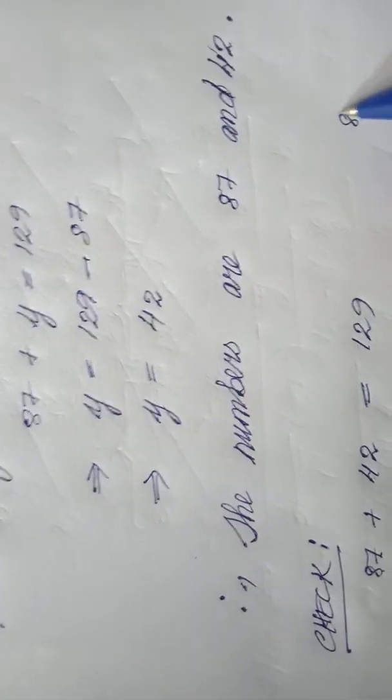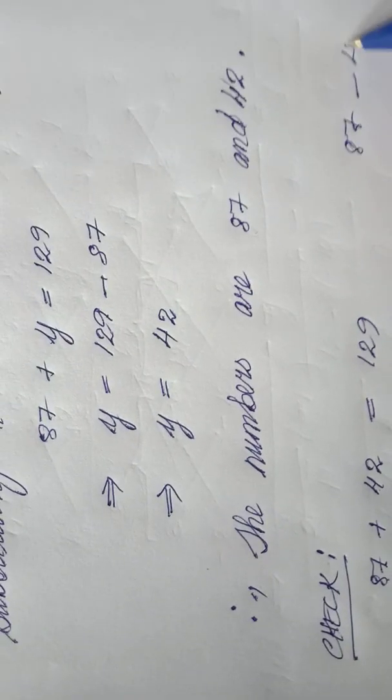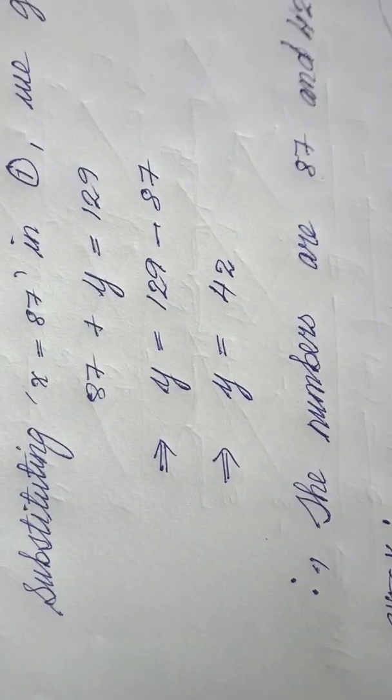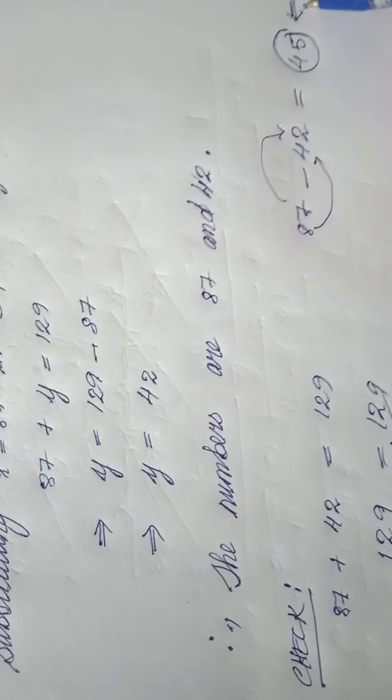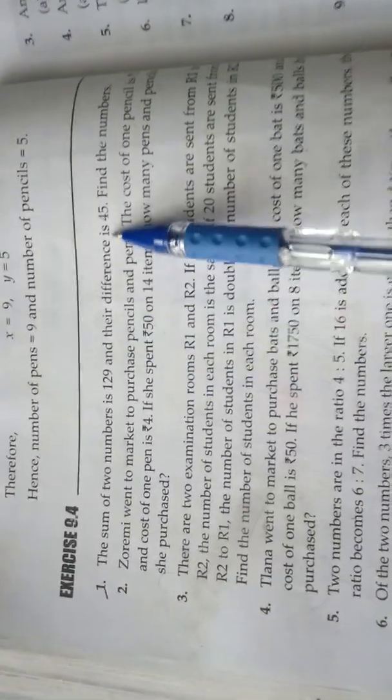You can verify the second part. The difference is 45. 87 minus 42 equals 45. Seven minus two is five, eight minus four is four, so 45. And in the equation, the question stated their difference is 45.